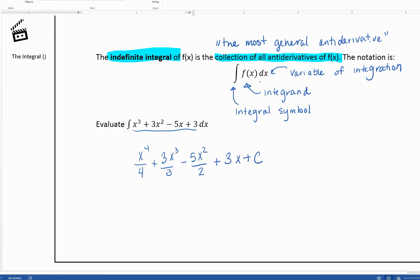And the only thing we can do to simplify it is divide out our 3s. So our final answer here would be x to the fourth over 4 plus x cubed minus 5x squared over 2 plus 3x plus c. So when you see that symbol, it means we're taking the anti-derivative.